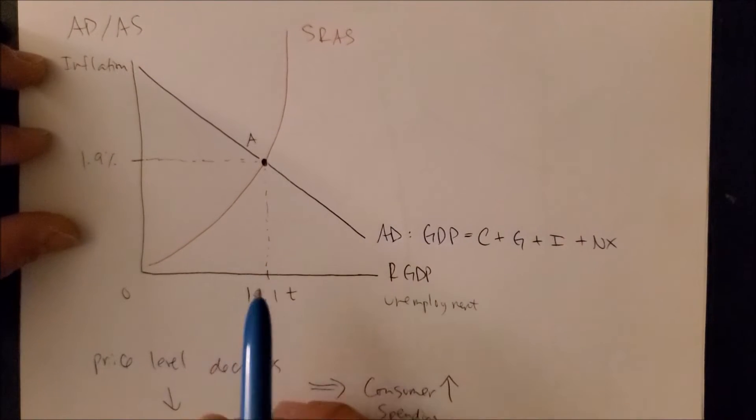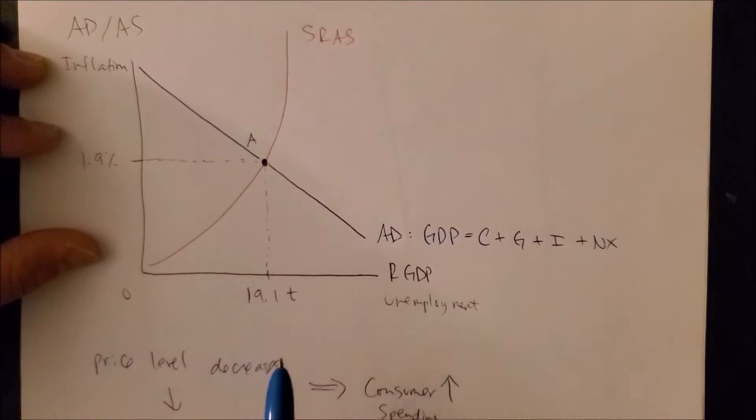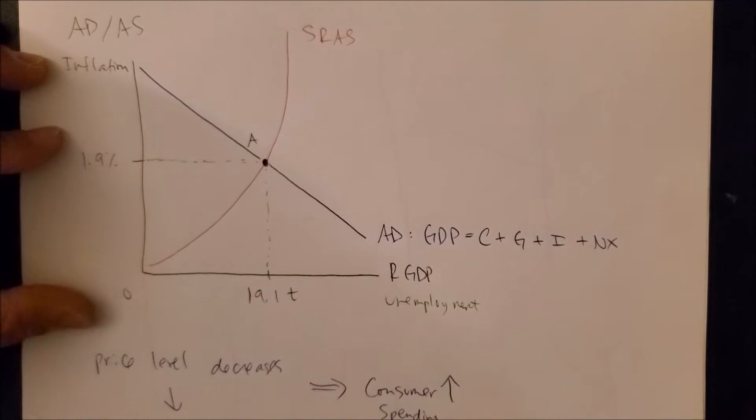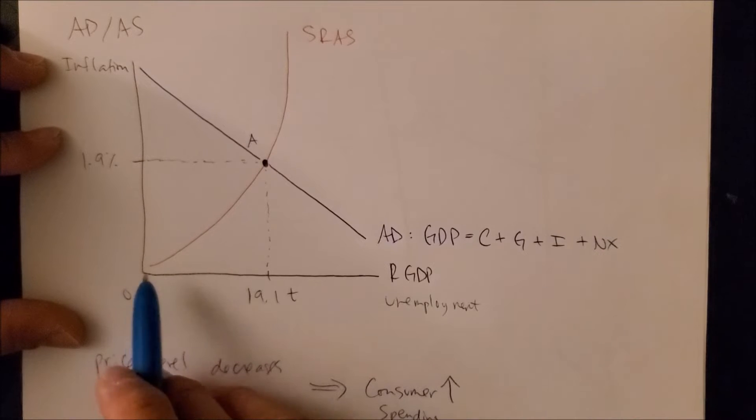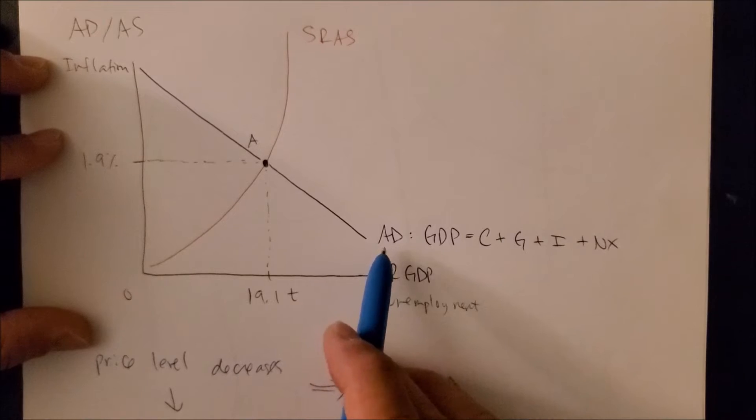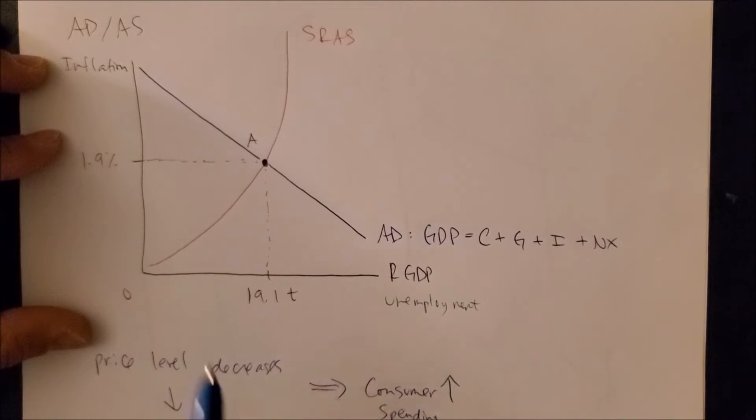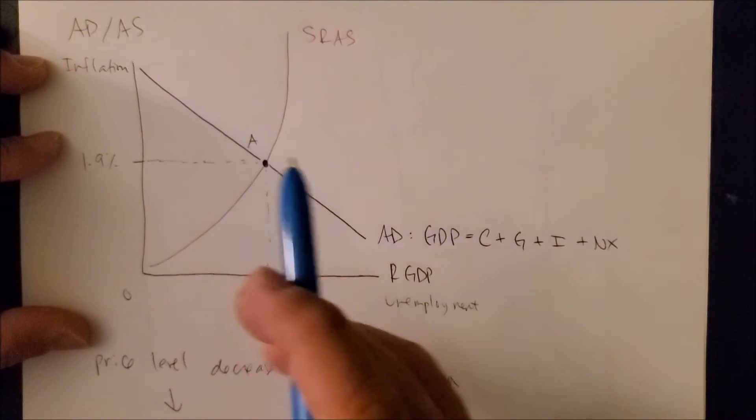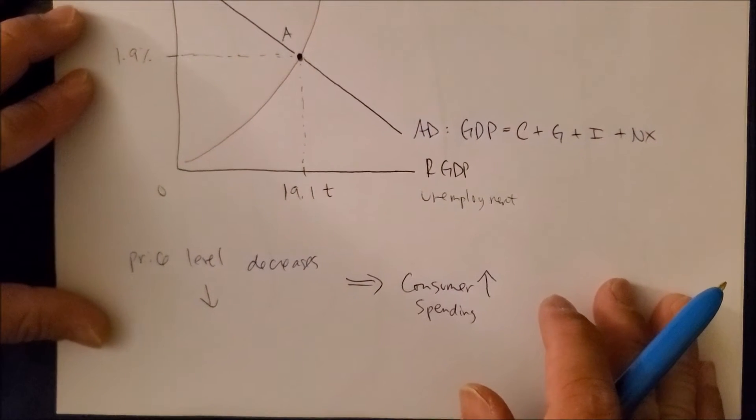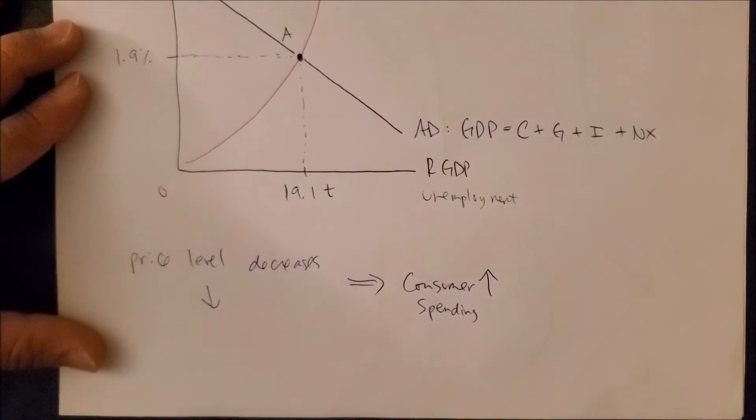So we can kind of tell that the SRAS looks a lot different based upon the curvature versus the straight curve that we have with AD. And we have to ask the question: why do we see an upward sloping SRAS curve as opposed to the downward AD curve? For the SRAS curve, let's now focus on the x-axis.